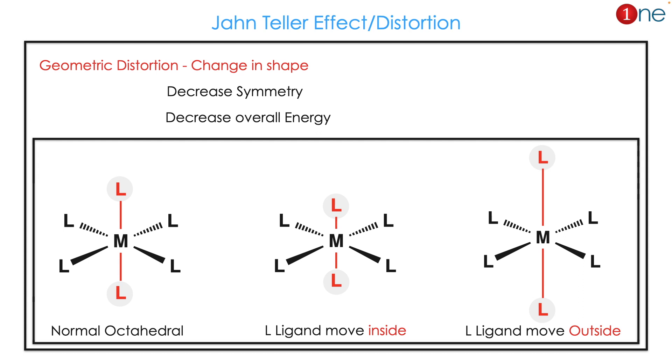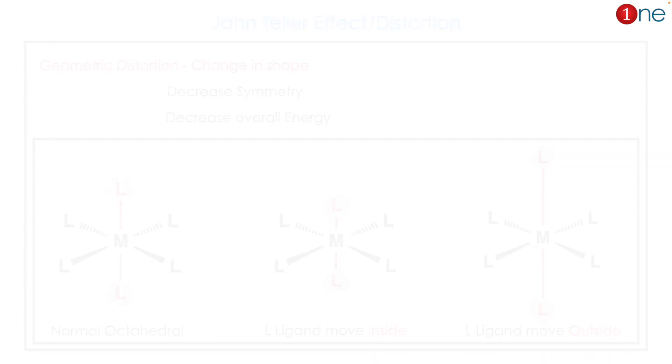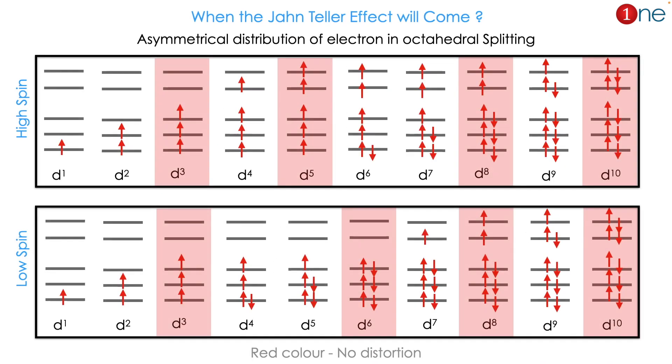In the octahedral system, the distortion happens in the z-axis. The ligands on the z-axis can go above or below, or you can say inside or outside. Moving up or down, these ligands create the distortion.